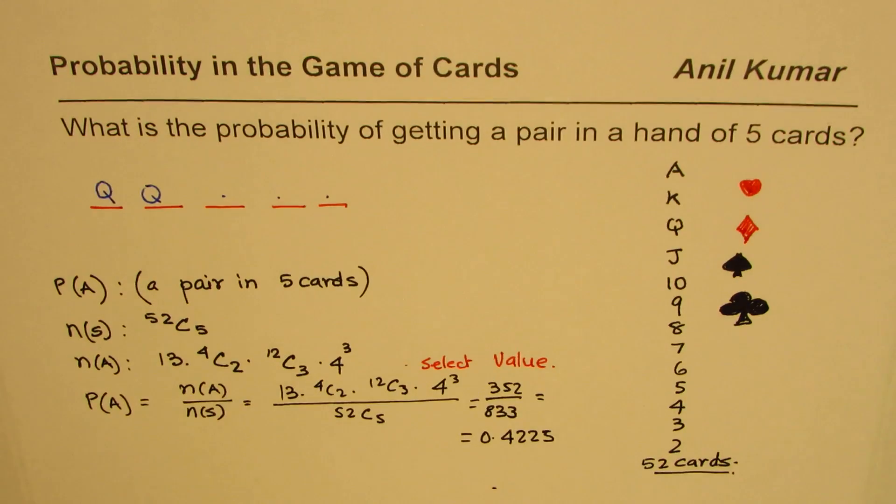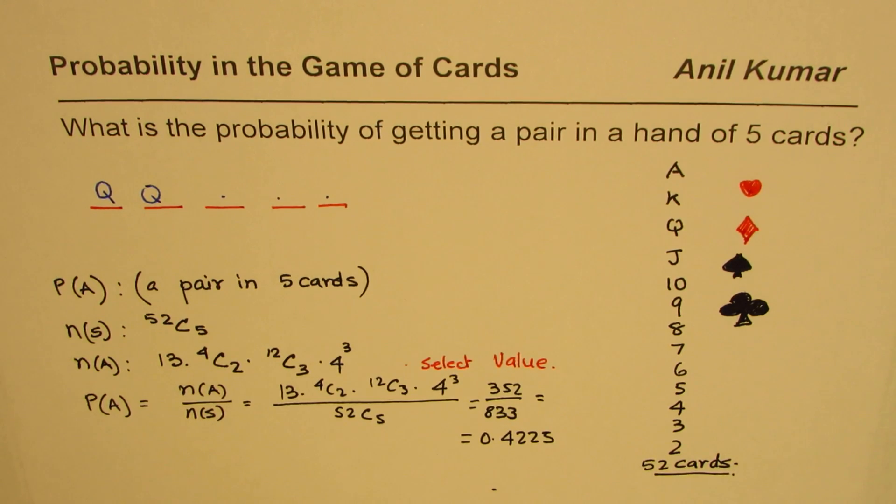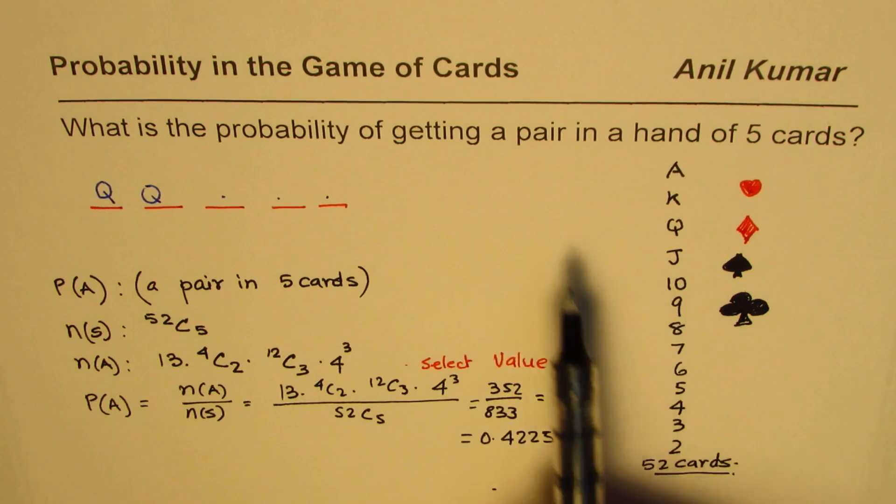I hope you understand how to find the probability of getting a pair in the game of poker. In the game of poker, five cards are distributed. As an exercise, you can apply the same principle and find the probability of getting a pair in a hand of three cards.